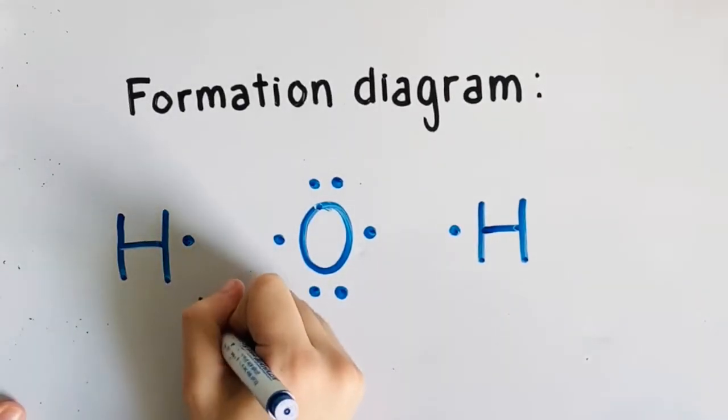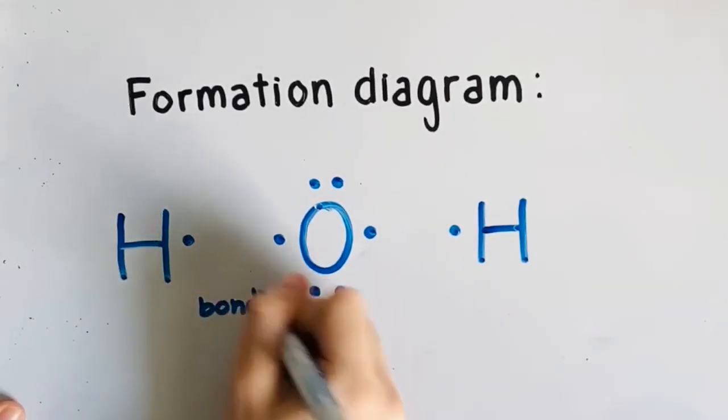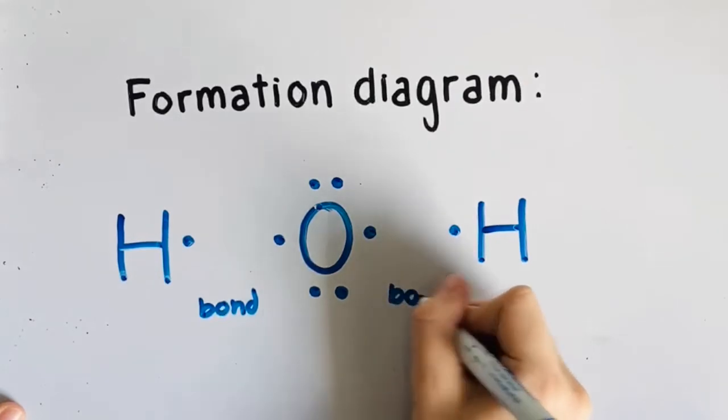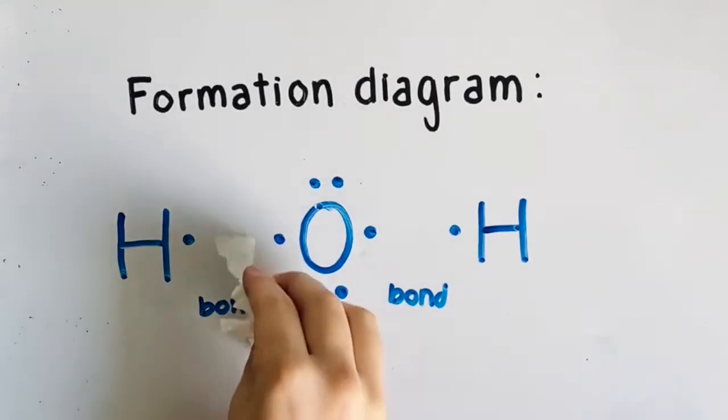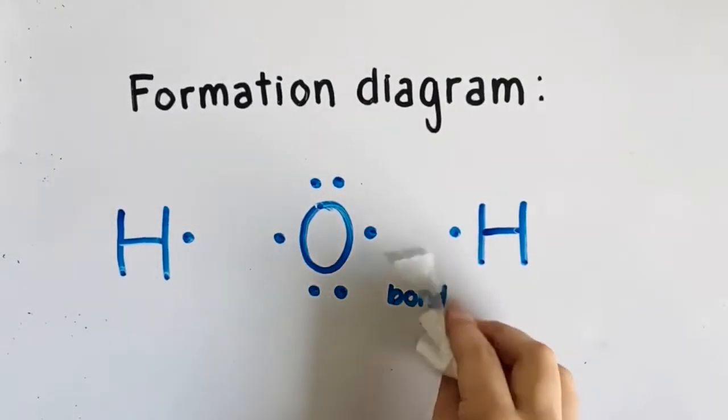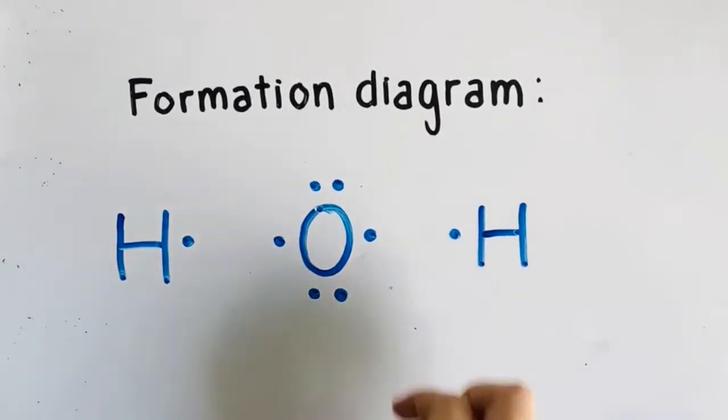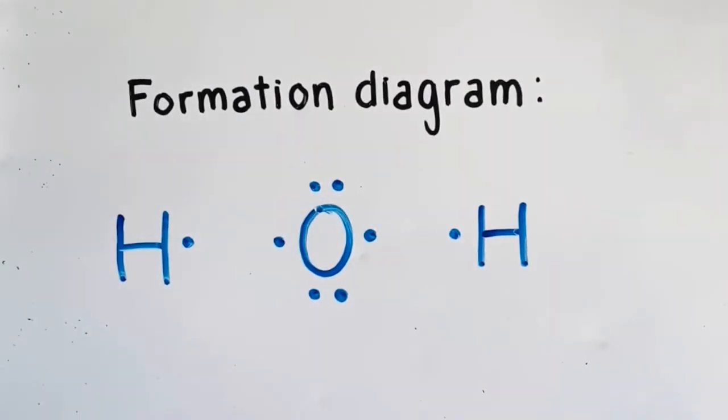Now, we know that oxygen needs two more electrons to complete its valence shell. As we mentioned before, hydrogen is a special case where it requires two valence electrons to complete its valence shell. Since they are bonding, they will share electrons. By sharing, they will both have completed valence shells.